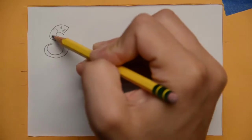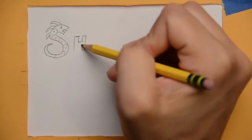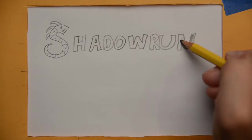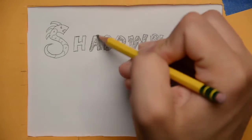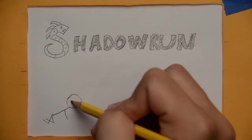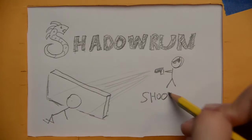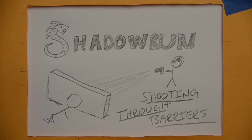In Shadowrun 5th edition, it will always eventually be the case that bullets will start to fly. When this happens, the natural thing to do is to find something big and solid and get behind it. But what if you still want to try and shoot at the target behind the brick wall? Well, then you'll need to understand the rules for shooting through barriers.